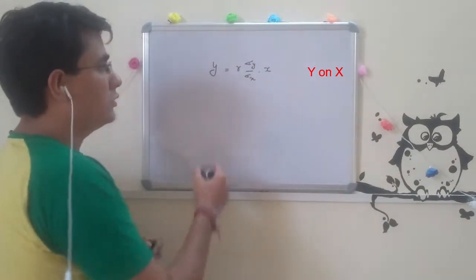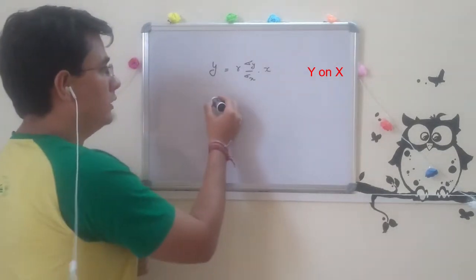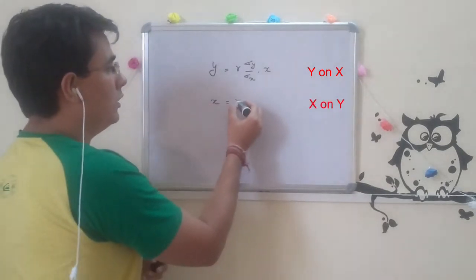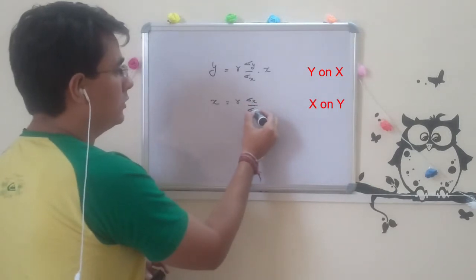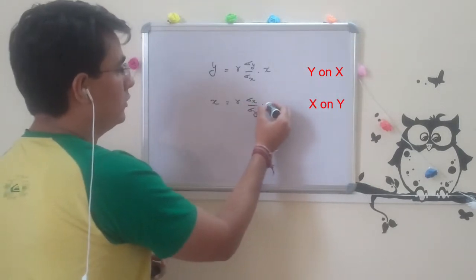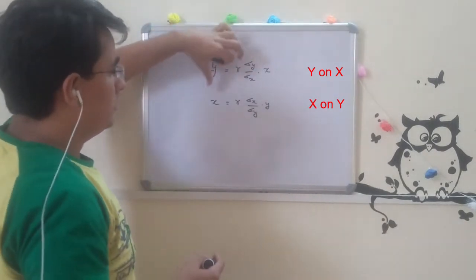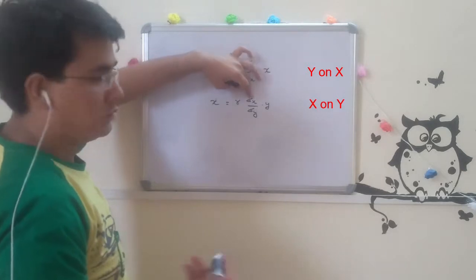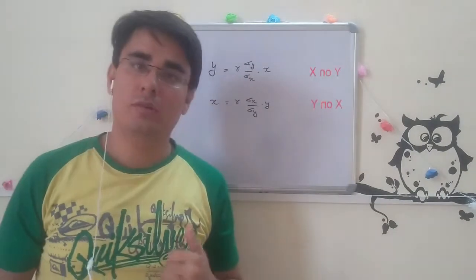Next, there is regression equation of x on y. That would be x = r * (sigma x / sigma y) * y. Remember, if it is y, then it should be y on x, then it should be x. This is basically the regression equation formula.